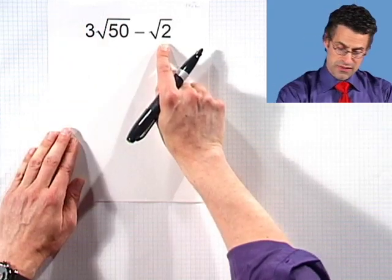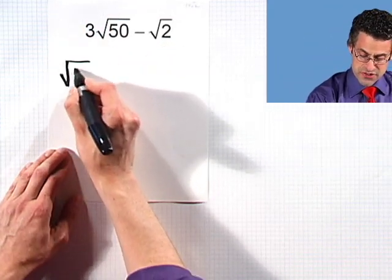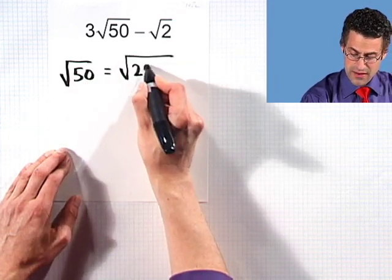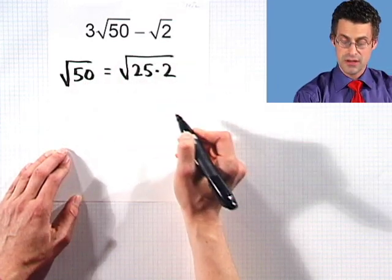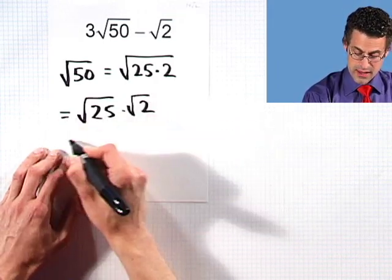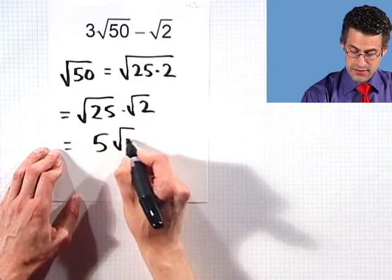But look, the square root of 50, I can simplify a little bit. Square root of 50 is actually the square root of 25 multiplied by two. And I can now use the property that breaks up that square root. And I see five square root of two.